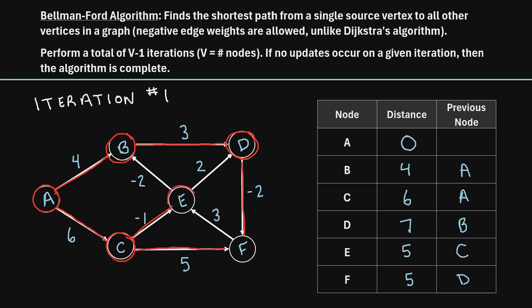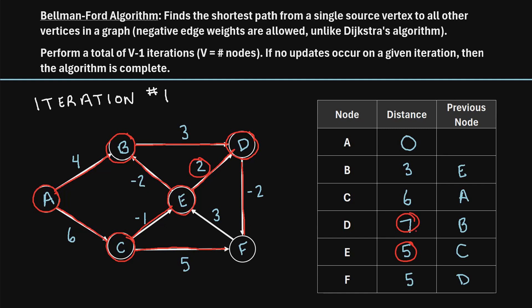Now moving on to node E. We can go from node E to node B, which is a distance of negative two. Node E has a distance of five, so five minus two is three. Is three smaller than the current value to get to node B? Yes, three is smaller than four, so we update B to three, with previous node now being E. If we go from node E to node D, that's a distance of two. Five plus two is seven, which equals D's current distance of seven, so we don't update that.